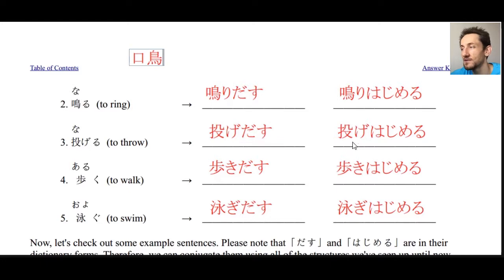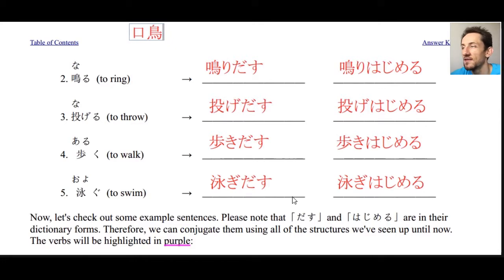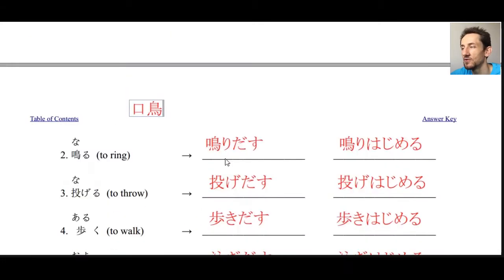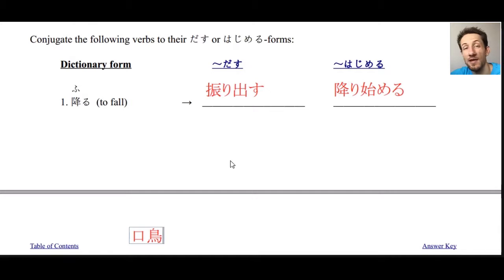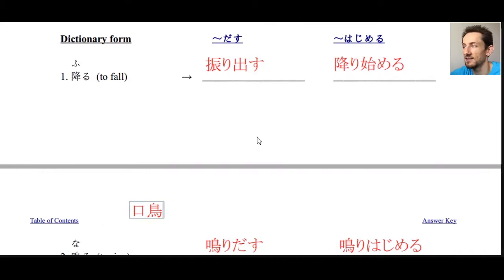Number three: nageru, to throw — nage dasu and nage hajimeru, to begin throwing. Number four: aruku — aruki dasu, aruki hajimeru, to begin walking. Number five: oyogu — oyogi dasu, oyogi hajimeru, to begin swimming. Really simple — just adding dasu or hajimeru to the masu stem of a type 1, 2, or 3 verb. Write it in hiragana rather than kanji, though you may see kanji sometimes.